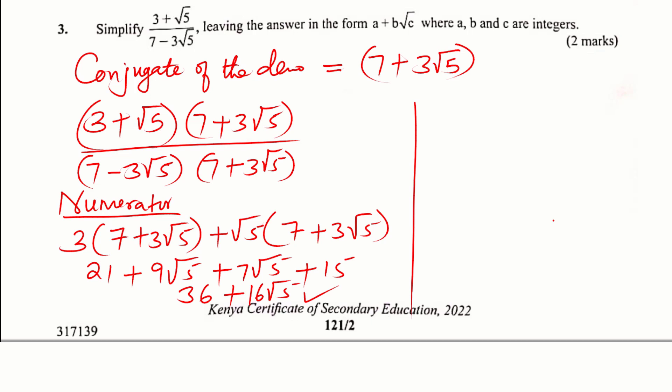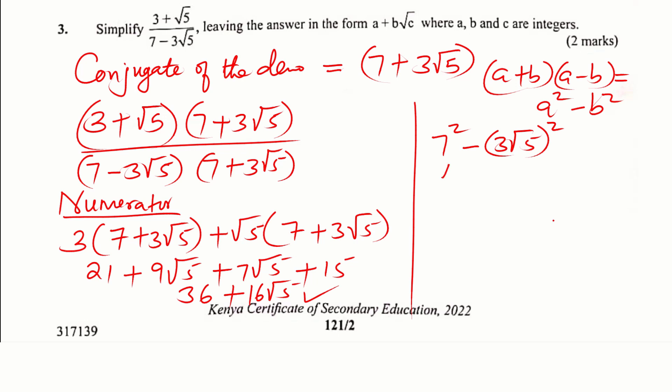So that is the numerator. Now for the denominator, I'd like you to notice that the denominator is the difference of two squares. This will be a plus b, a minus b. To expand that, we get a squared minus b squared. So the solution will be you take 7 squared minus 3 root 5 squared, and this will give 49 minus 45. 3 root 5 squared is 45, and this will give 4.